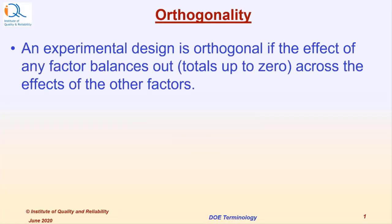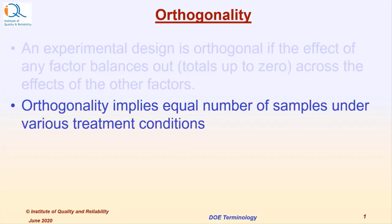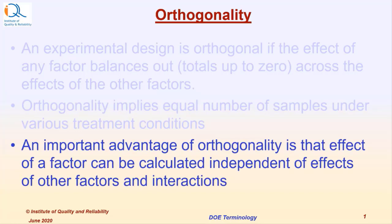Orthogonality: An experimental design is orthogonal if the effect of any factor balances out, that is totals up to zero, across the effect of the other factors. Orthogonality implies equal number of samples under various treatment conditions.